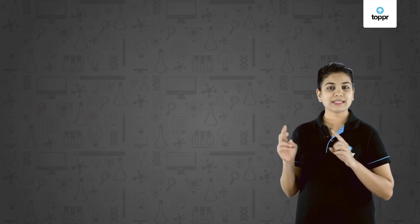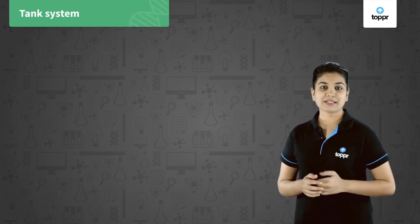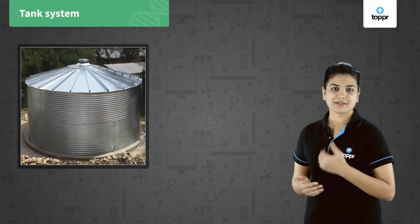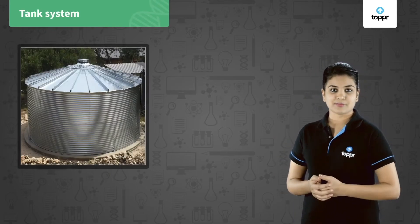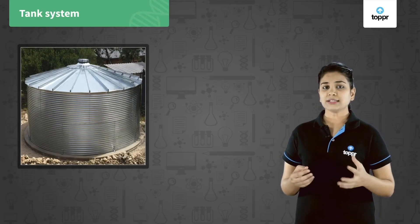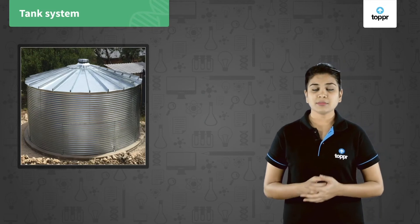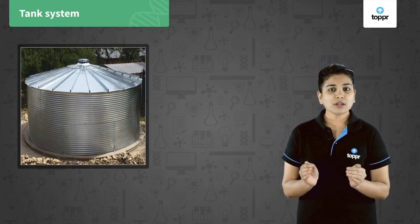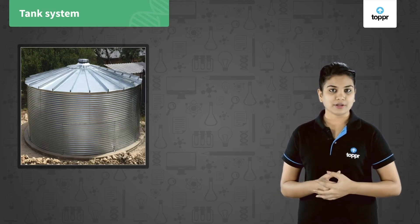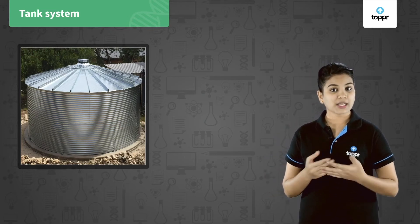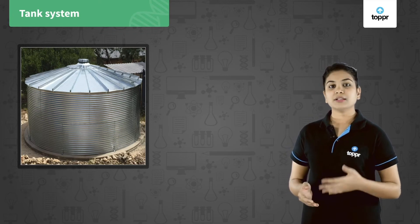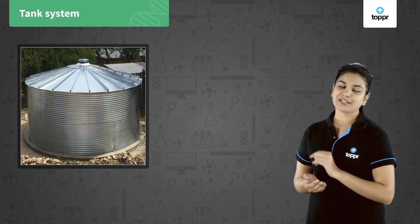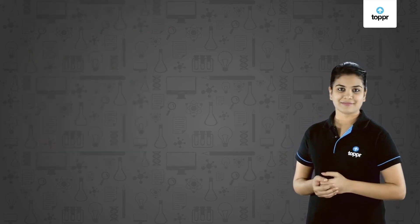The second irrigation system is the tank system. A tank system is basically a small reservoir which catches the runoff of smaller catchment areas.